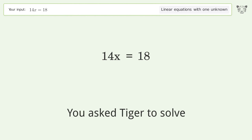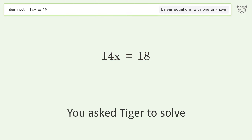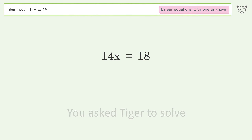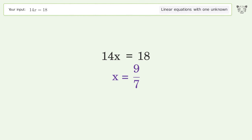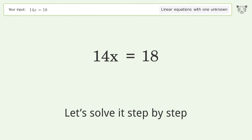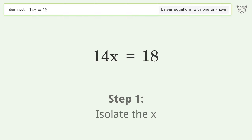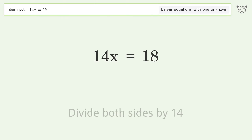You ask Tiger to solve this — it deals with linear equations with one unknown. The final result is x = 9/7. Let's solve it step by step: isolate the x, divide both sides by 14.